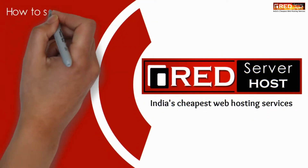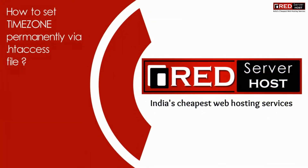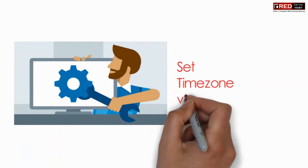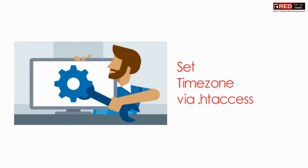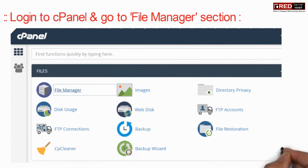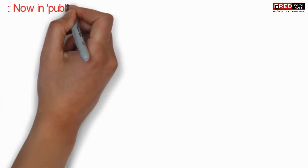Today in this video we will learn about how to set timezone permanently via the .htaccess file. For that, login to cPanel and then go to the File Manager section.